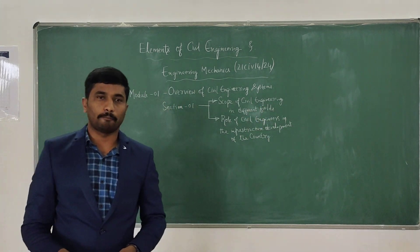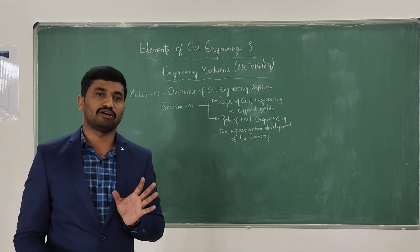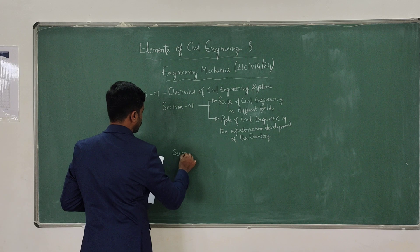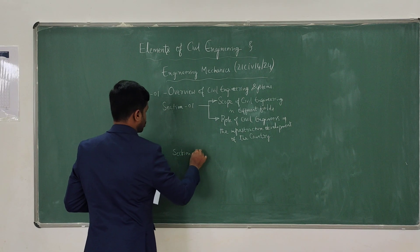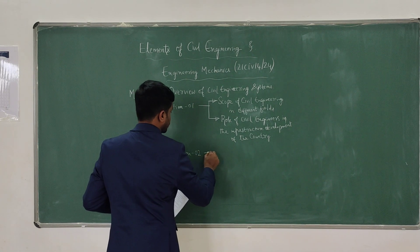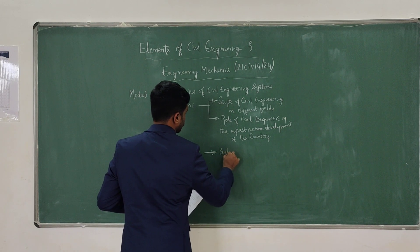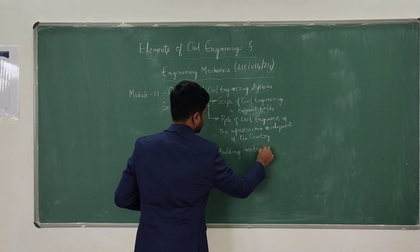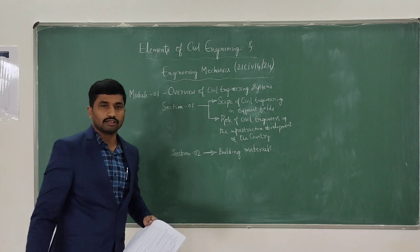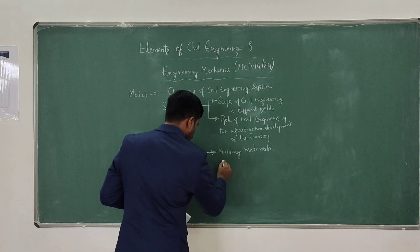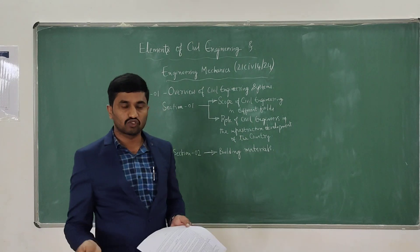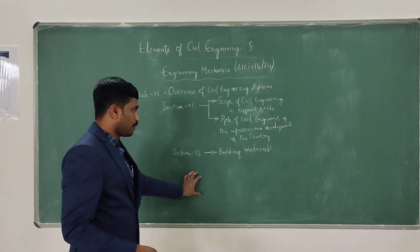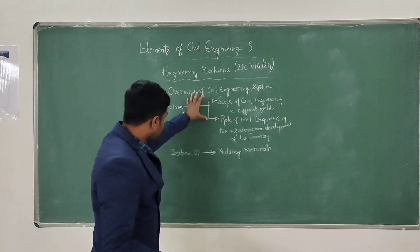In Section 2, we are having building materials — especially a few building materials like stones, bricks, wood, glass, cement, and aggregates. These are the different building materials we are going to discuss in Section 2.